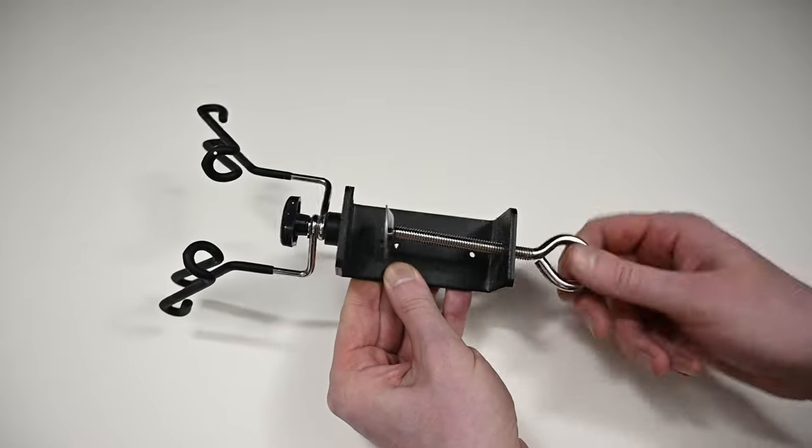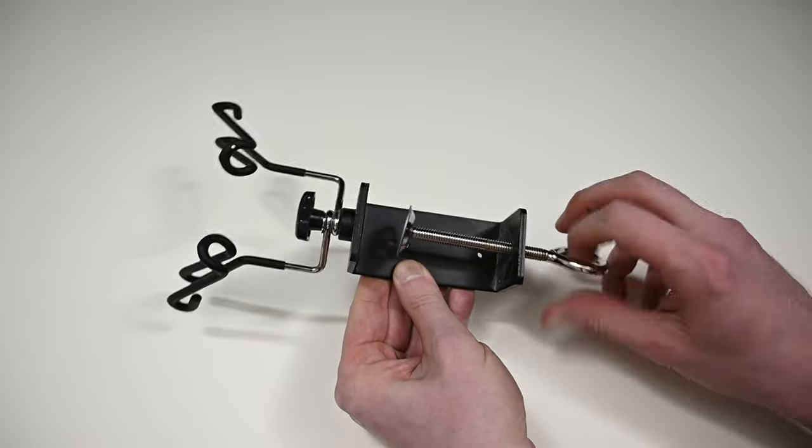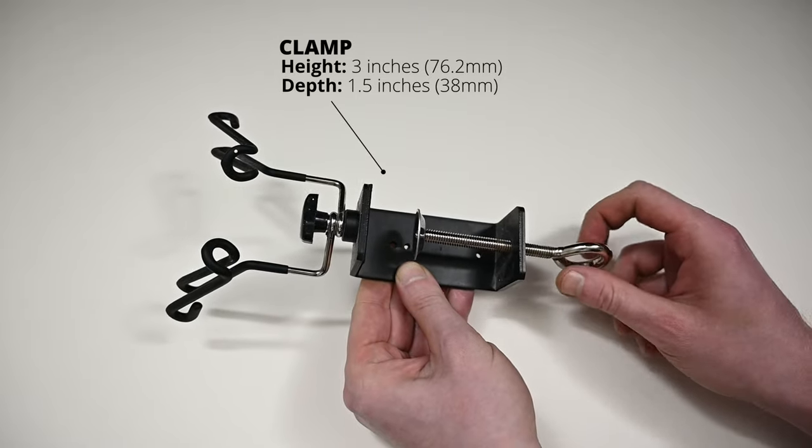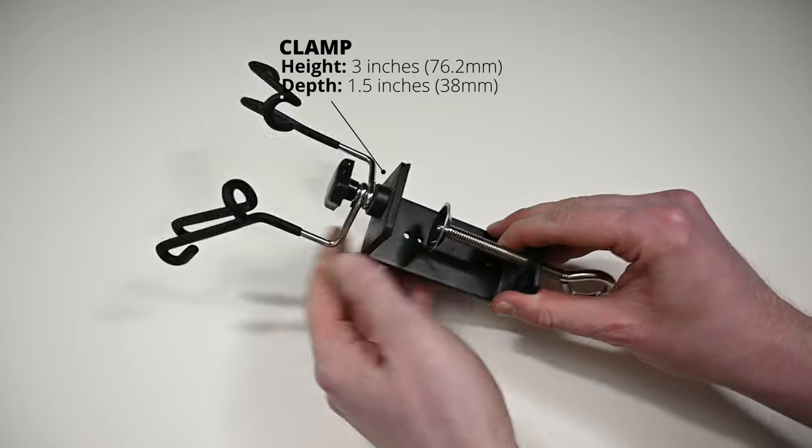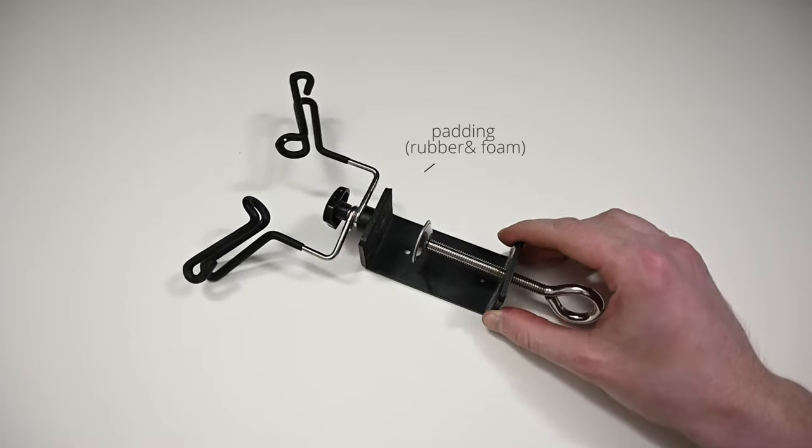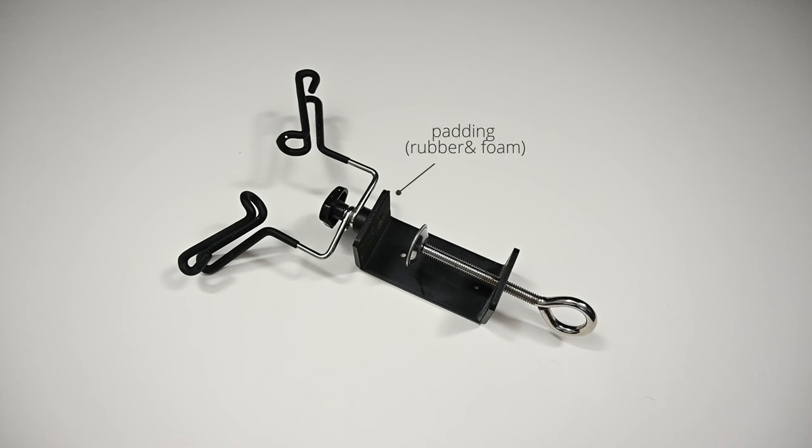This way, I just never have to worry about it falling if I accidentally pull on the airbrush hose. And this is a large, heavy-duty clamp which will accommodate tables up to around 3 inches or around 76 millimeters. There's also a small amount of padding on the top part of this clamp to help protect the surface that you're mounting it to.